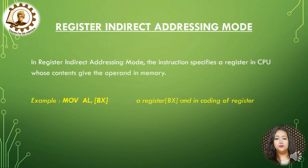In register indirect addressing mode, the instruction specifies a register in the CPU whose contents give the operand address in memory. For example, MOV AL, [BX], where BX is the address register.